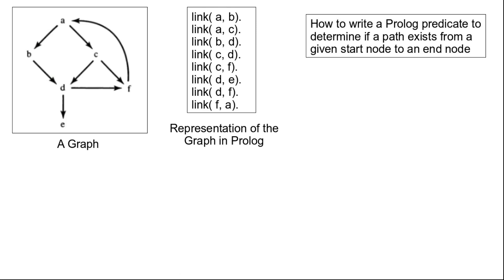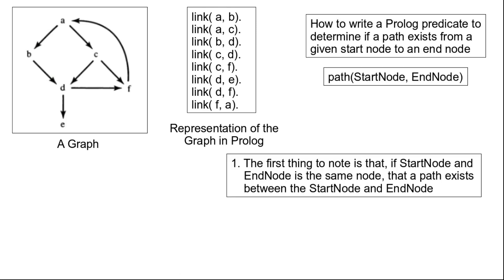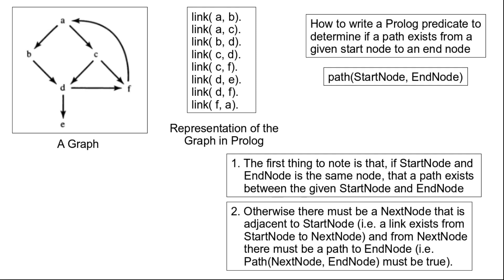To write this program we should first realize that if the start node and end node are the same, then a path exists from that node to itself. That is the first statement. The second is that if the two nodes are different, and we can find a next node adjacent to the start node — meaning a link exists from start to next — and there is also a path from next to the end node, then a path exists from start to end.